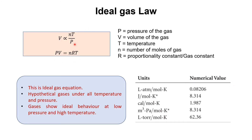When all the laws — Boyle's Law, Charles' Law, Gay-Lussac's Law, and Avogadro's Law — were combined, a relationship was obtained: volume is proportional to NT over P. By removing this proportionality, the ideal gas equation was obtained: PV equals nRT. Where P is the pressure, V is the volume, N is the number of moles of gas, R is the proportionality constant, and T is the temperature. This equation is called the ideal gas equation.